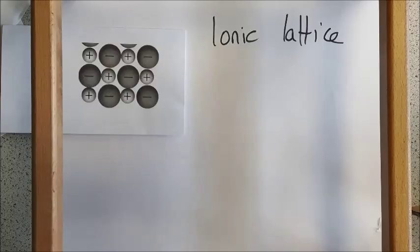Diamond and graphite are what are called giant covalent structures. They've got big structures, which is why they have high melting and boiling points, but they are all covalent bonds.